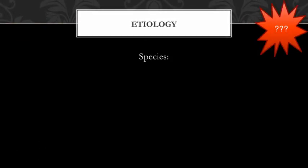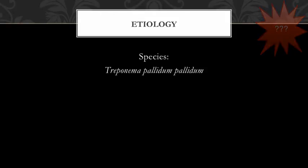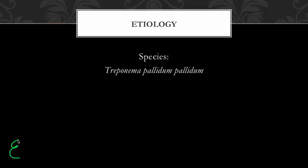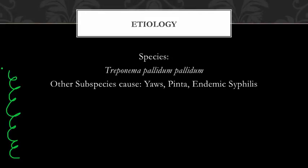The etiology of syphilis. Do you remember the bacteria that causes syphilis? Syphilis is caused by a bacteria called Treponema pallidum pallidum, which is easy to recognize in pictures because it is shaped like a spiral. While the subspecies Treponema pallidum pallidum causes syphilis, other subspecies cause the diseases yaws, endemic syphilis, and pinta. These are very rare in American medicine, but can cause false positive serologies for syphilis in American immigrants.